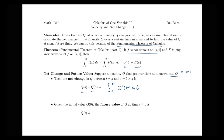Let's think about the net change problem with a specific example. If q prime is velocity, we're looking at the integral from a to b of v(t) dt. Integrating velocity gives us the antiderivative of velocity, which relates to position. In terms of units, if velocity is in meters per second and time is in seconds, we're summing products of meters-per-second and seconds, giving units of meters — a distance quantity, which makes sense.